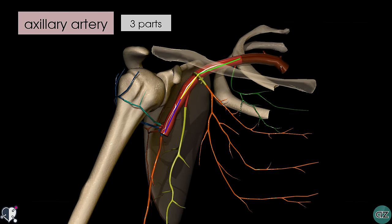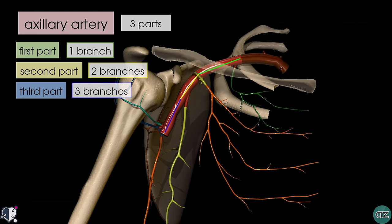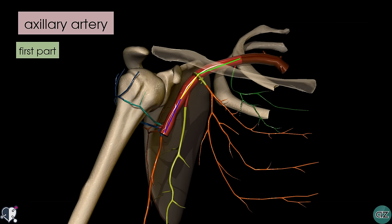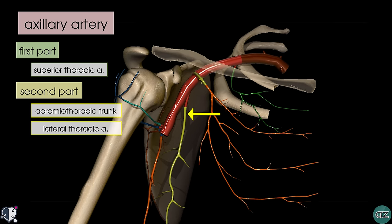I've removed the pectoralis minor muscle and we'll take a look at the six branches of the axillary artery. Quite conveniently, the first part of the axillary artery has one branch, the second part has two branches, and the third part gives rise to three branches. The first branch, highlighted in green arising from the first part, is called the superior thoracic artery. The two branches from the second part, highlighted in yellow, are the acromiothoracic trunk — also known as the thoracocromial artery — and the lateral thoracic artery.